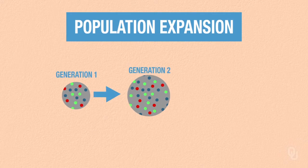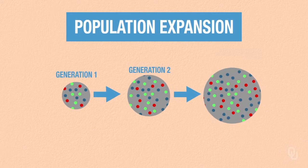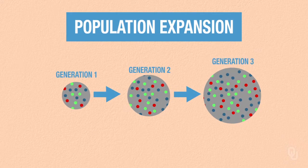Imagine a population expansion where each generation the population is larger than the previous generation. In this scenario, nature is taking a very good sample of the traits in the previous generation. There is a lot of that sampling with replacement that's going on.